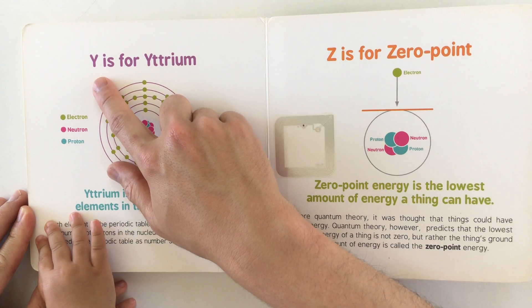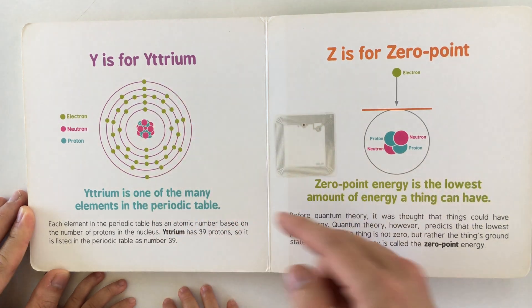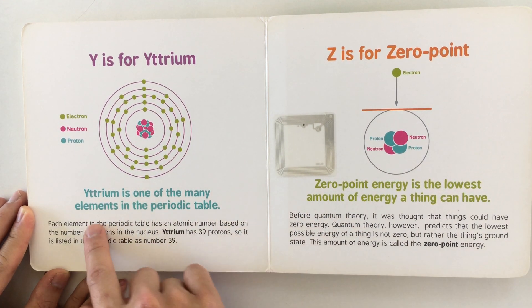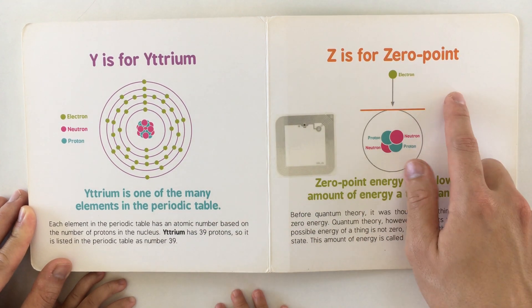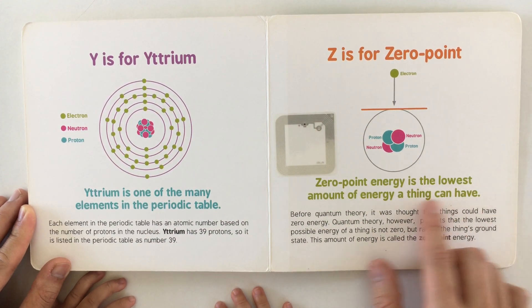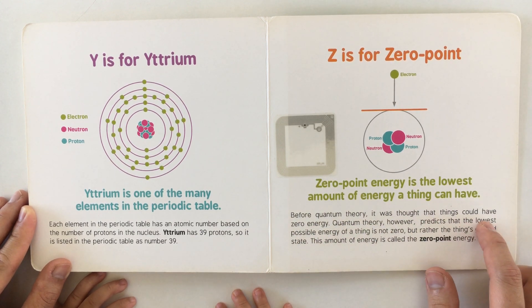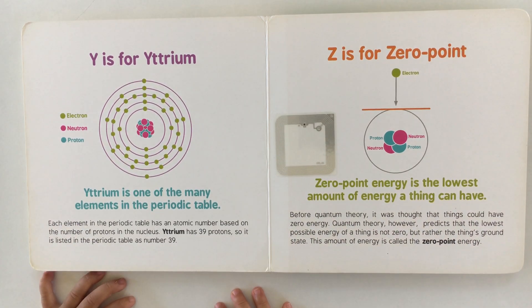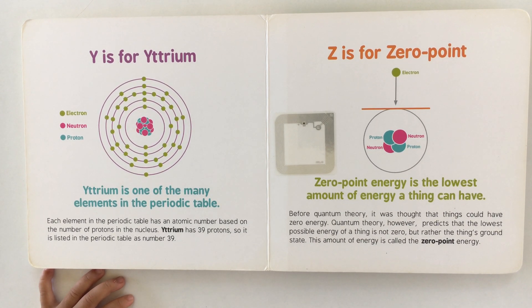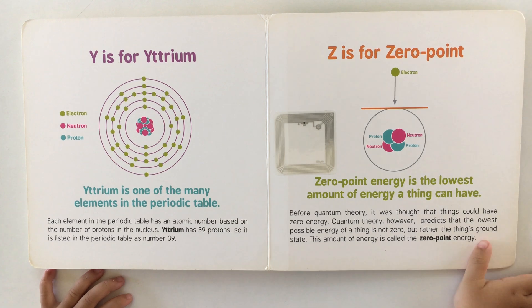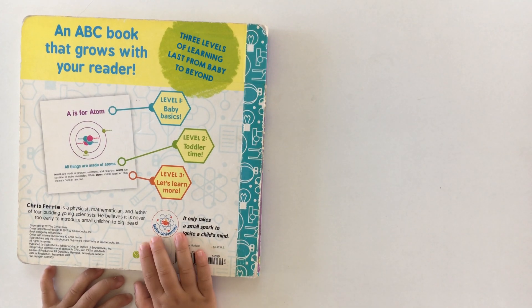Y is for yttrium. Yttrium is one of the many elements in the periodic table. Z is for zero point energy. Zero point energy is the lowest amount of energy a thing can have. Before quantum theory, it was thought that things could have zero energy, but quantum theory predicts the lowest possible energy is not zero but rather the thing's ground state — that amount is called zero point energy. We finished — that's a long book!